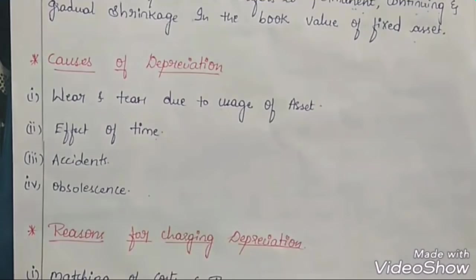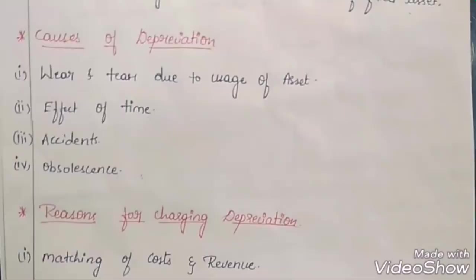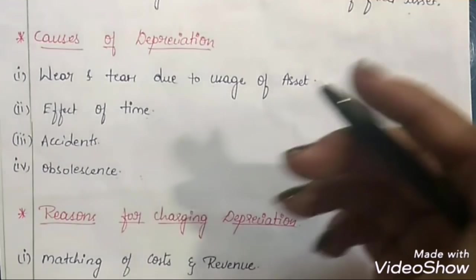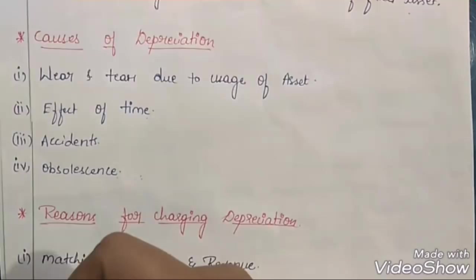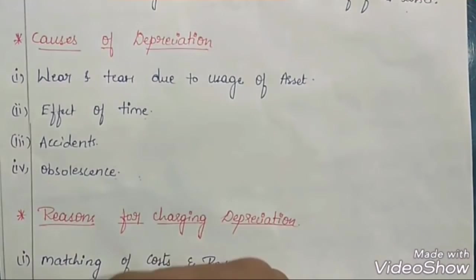Fourth is obsolescence — which means outdated. Whenever a product becomes outdated or obsolete, the value of the fixed asset will decrease. This mainly happens with technological or electronic products. When a new model of the same product enters the market, the value of the old asset will gradually decrease. So obsolescence is one of the main reasons for depreciation.